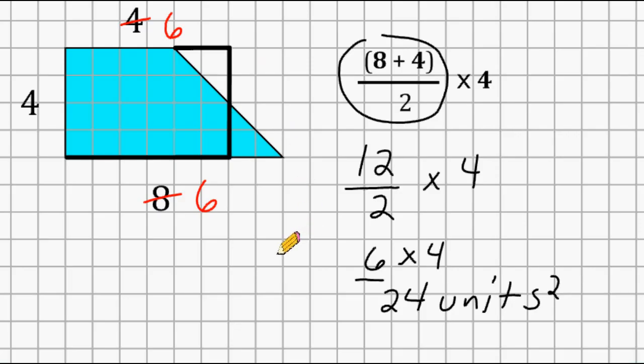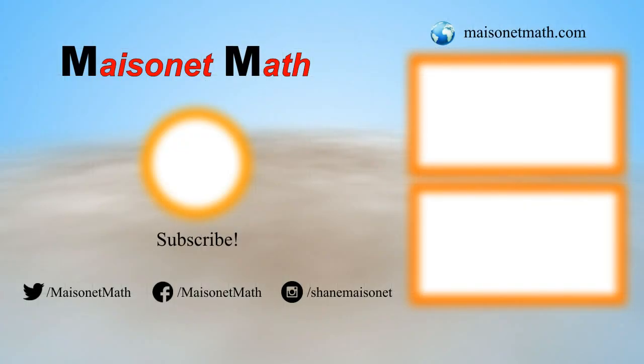So remember, when finding the area of any trapezoid, you have to take the two bases, add them together, and divide by 2, which is really finding the average length of those two bases. And then we take that result and multiply by the height of the trapezoid. And I'll see you in the next video. Thank you.